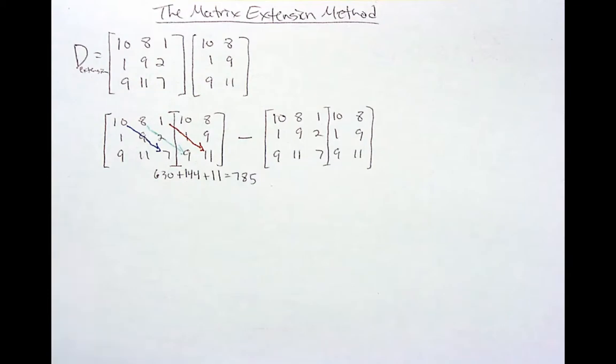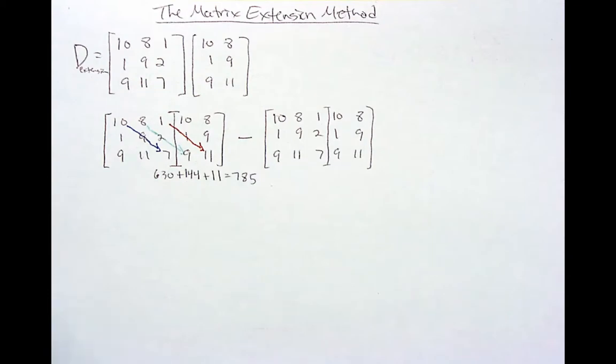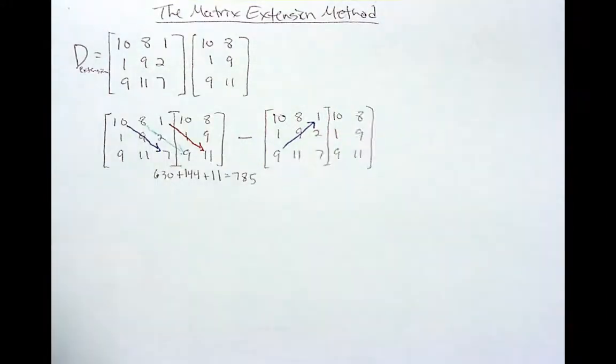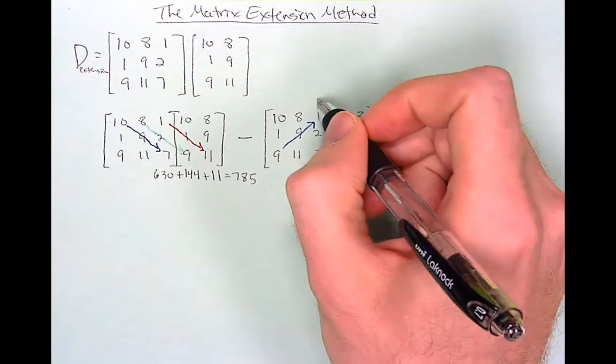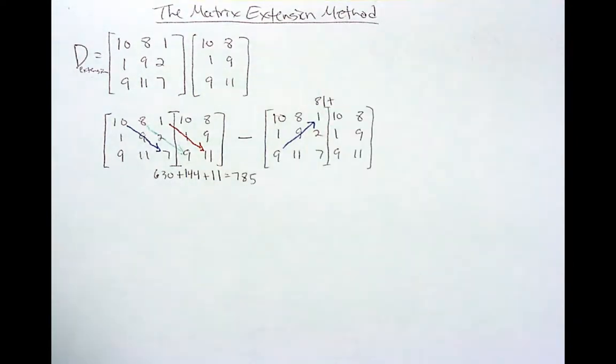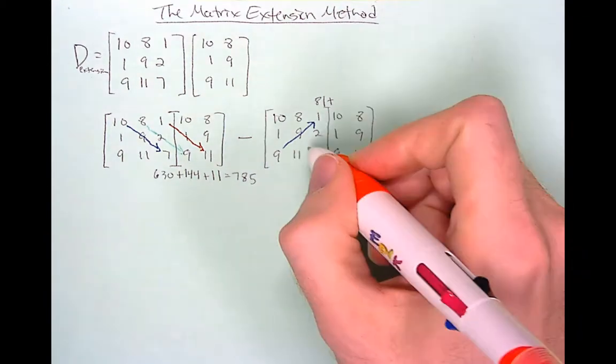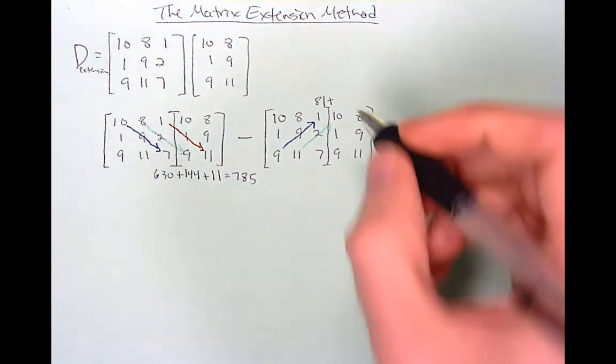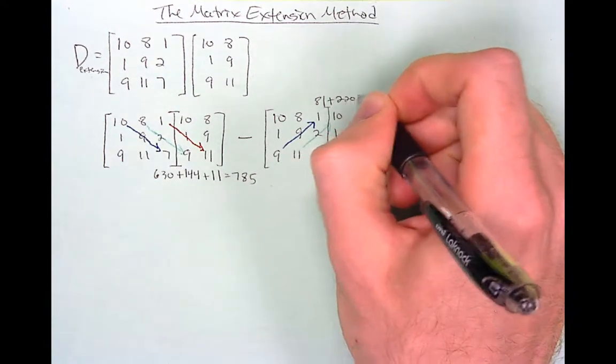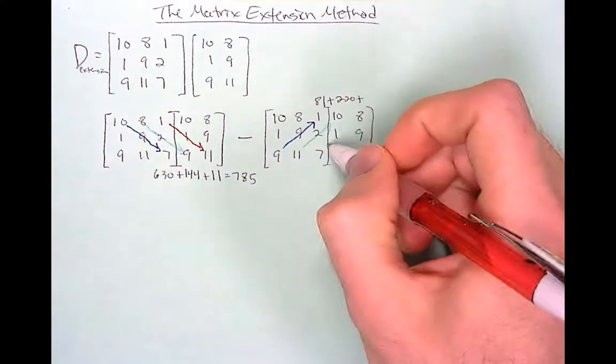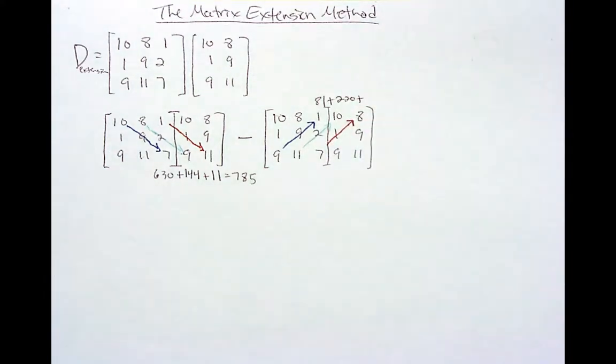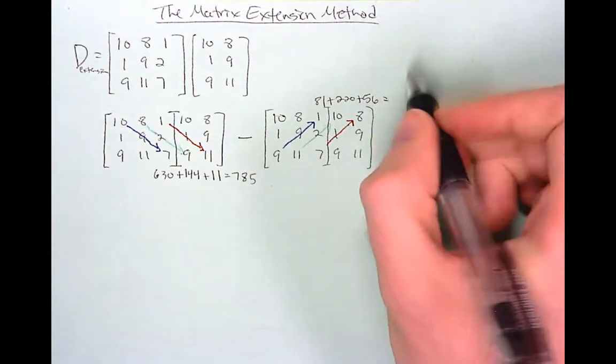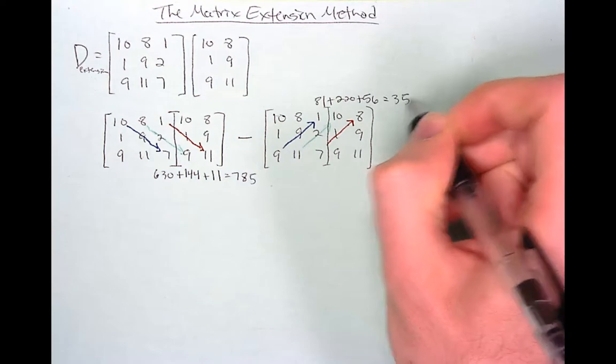Now you subtract sums of products again. Going up this way, 9 times 9 times 1 which is 81 plus 11 times 2 times 10 plus 7 times 1 times 8 which is 56. You add those together and you get 357.